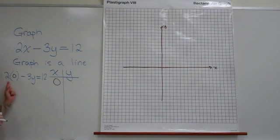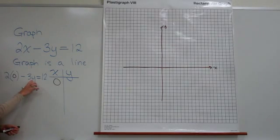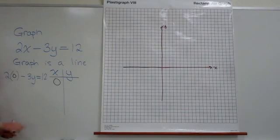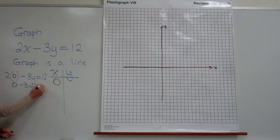Now once we have that, we have an equation that just has one variable in it. So we can use our equation solving skills that we learned earlier in order to find what the other coordinate's value is based on that choice. First I would carry out this multiplication. 2 times 0 is 0, so I have 0 minus 3y is equal to 12. Well 0 subtract 3y is negative 3y is equal to 12.